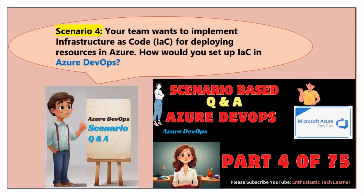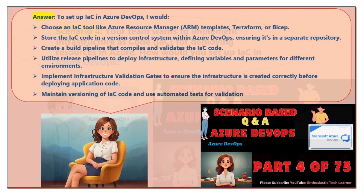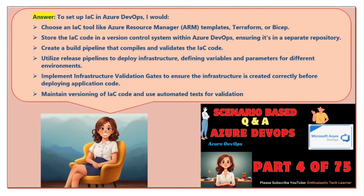Scenario four: your team wants to implement infrastructure as code (IaC) for deploying resources in Azure. How would you set up IaC in Azure DevOps? To set up IaC in Azure DevOps, I would choose an IaC tool like Azure Resource Manager (ARM) Templates, Terraform, or Bicep.